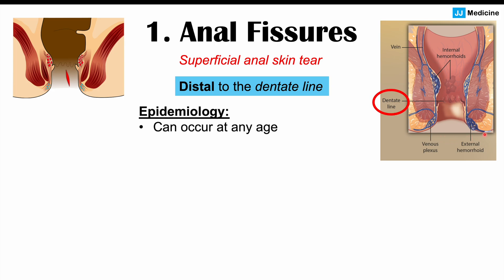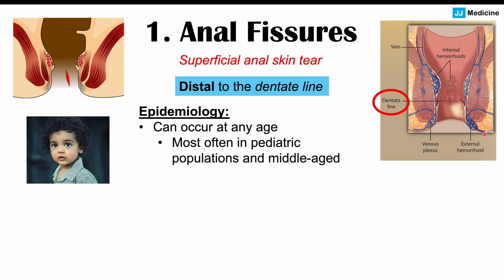Anal fissures can occur at any age, but they're most common in pediatric patients and in middle-aged patients. They are relatively common — many patients can have these and may not present to clinicians, but they can experience them.